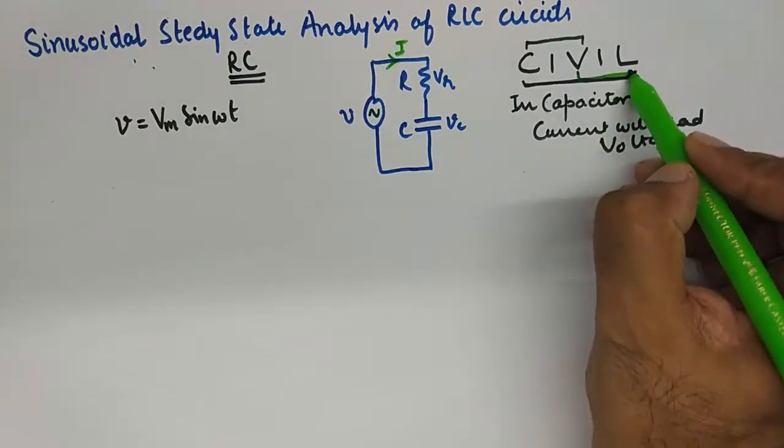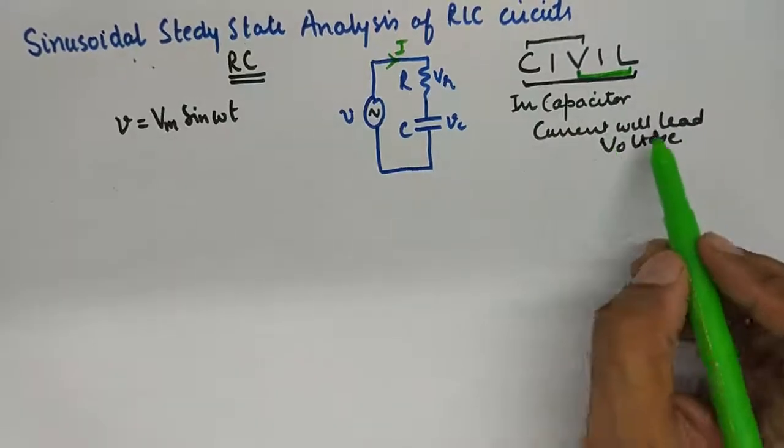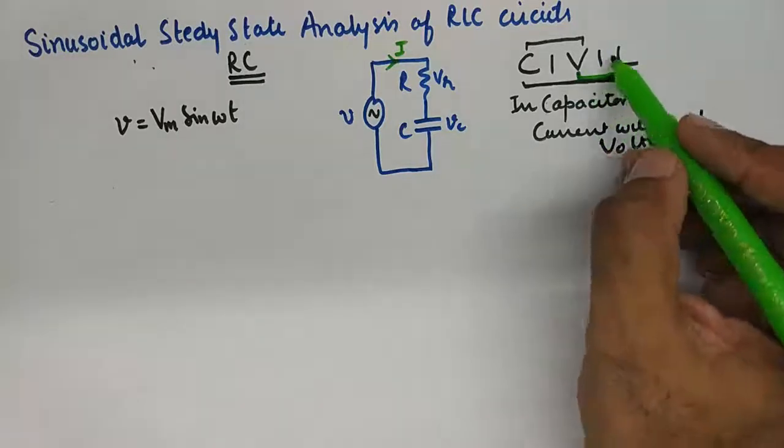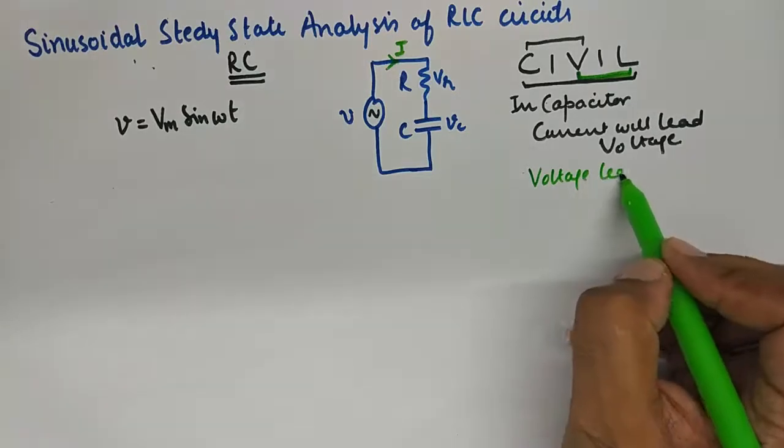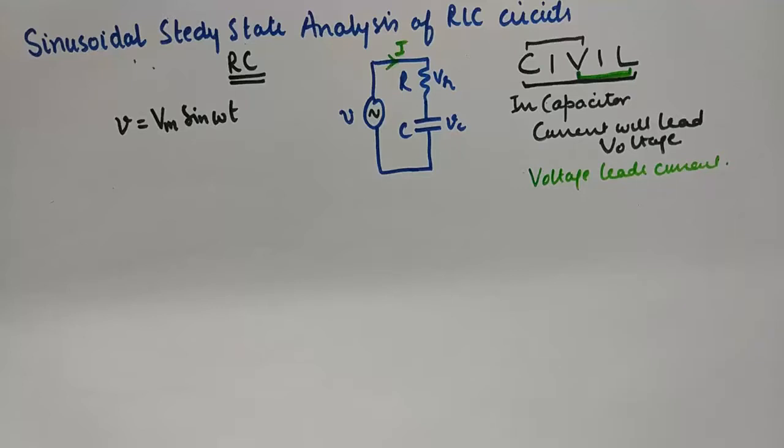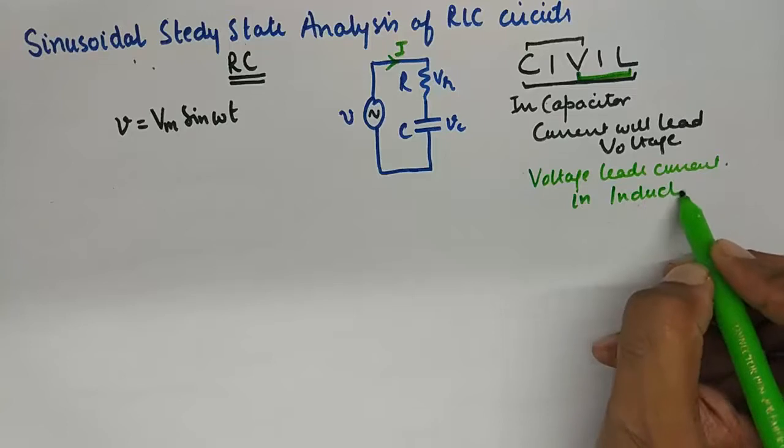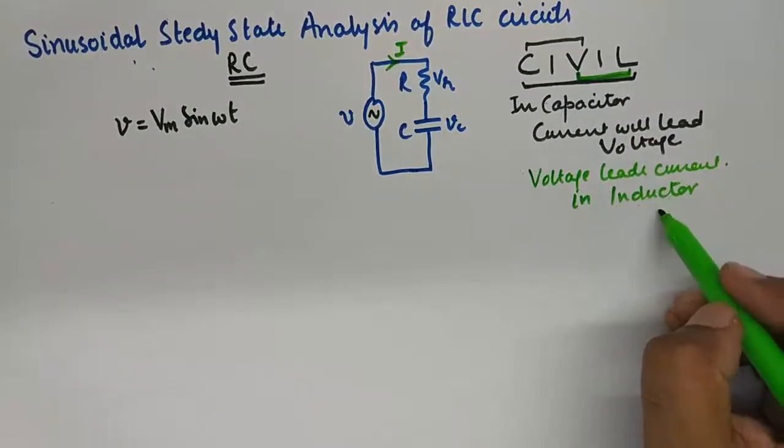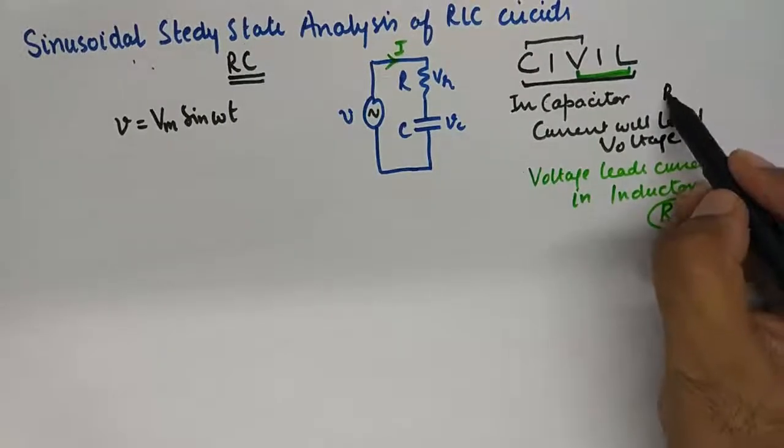The last three alphabets, VIL, will suggest that voltage leads current in inductor or a circuit having resistor and an inductor. So this is applicable for RL and this is applicable for RC.